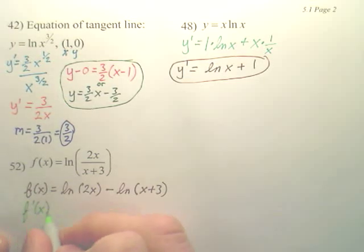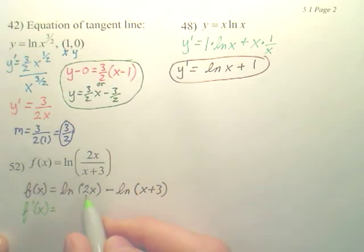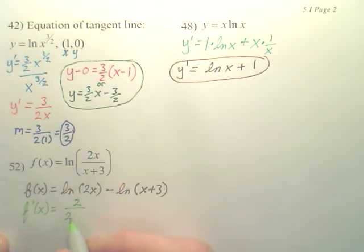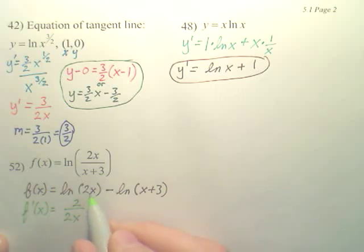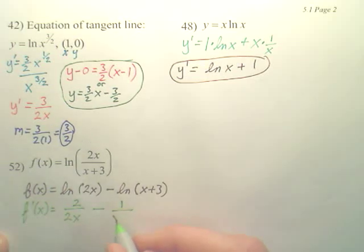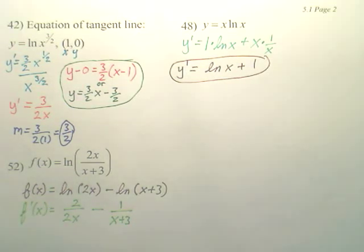Now, we just derive each one individually. So, f prime x is going to be... Well, the derivative of 2x is 2, over 2x. There's the first one. That simple. u prime, 2x divided by 2. Minus, the derivative of x plus 3 is 1, over x plus 3. There's your answer.